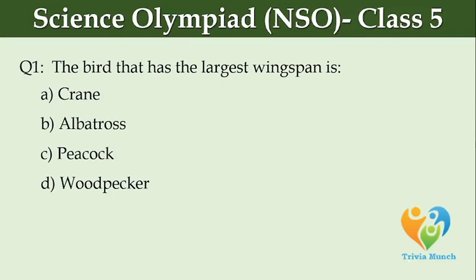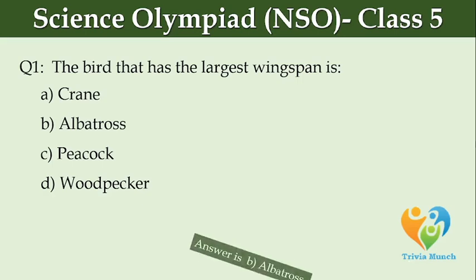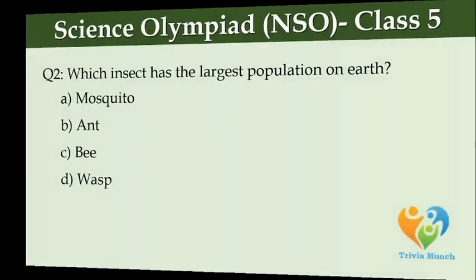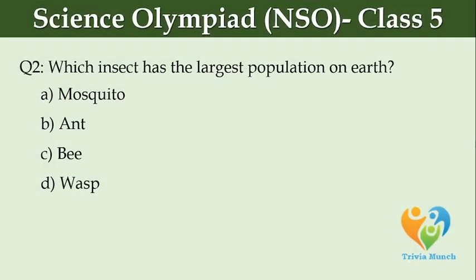Which insect has the largest population on earth? Option A: mosquito, Option B: ant, Option C: bee, Option D: wasp.